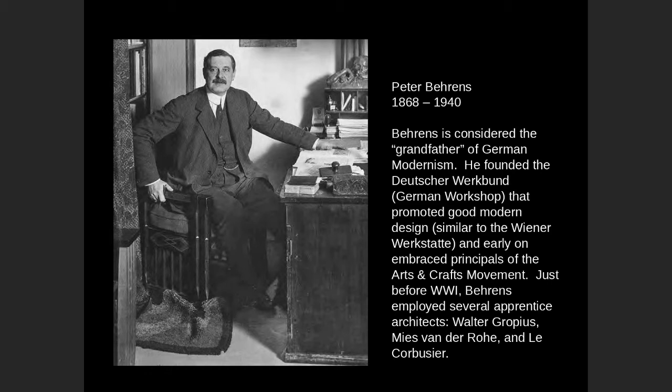Behrens was really the grandfather of German modernism. You might acquaint him with Louis Sullivan being the father of the Chicago School — influential to Frank Lloyd Wright and other architects. Behrens was kind of that figure in many ways. Walter Gropius, Le Corbusier, and Mies van der Rohe all worked for Peter Behrens at one time or another. The key modernist figures of Europe all worked for this gentleman.